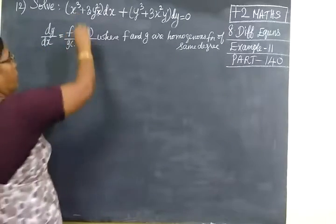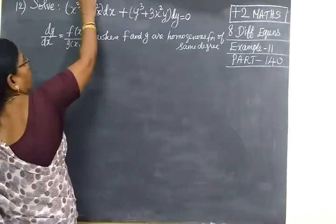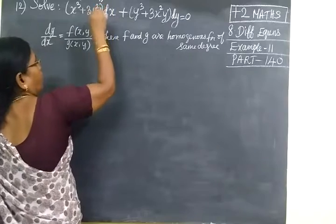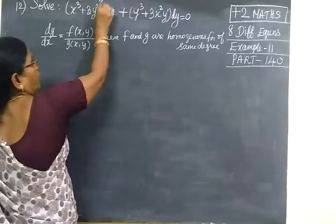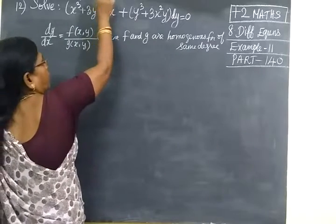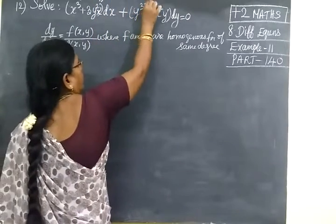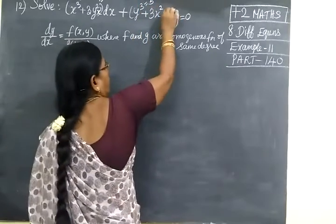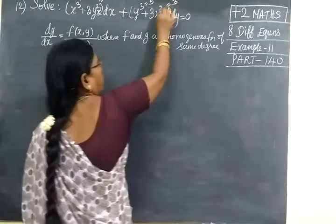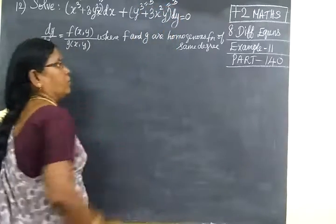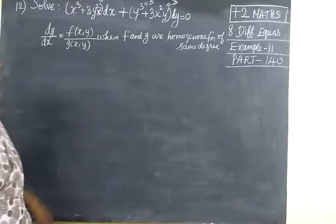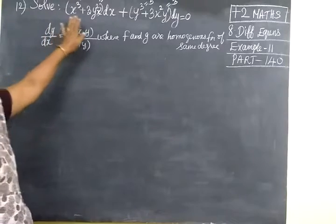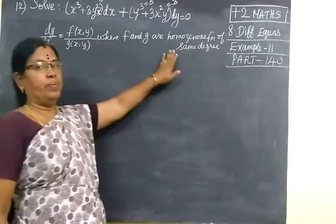Here x cube — the power is 3. If you add 2 and 1, here also 3. Then here the power is 3. If you add 2 and 1, the power is 3. So it is a homogeneous function of the same degree.